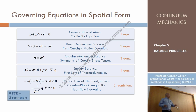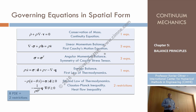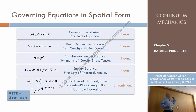Then we played the game of the angular momentum balance and we obtained, curiously enough, the symmetry of the stress tensor. That symmetry is in fact a set of three equations: sigma 1,2 equals sigma 2,1; sigma 1,3 equals sigma 3,1; sigma 2,3 equals sigma 3,1. So, three more equations.